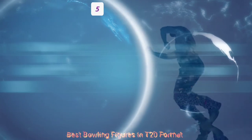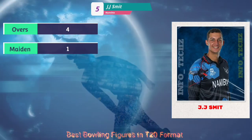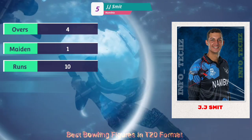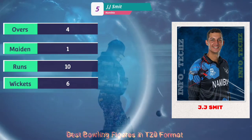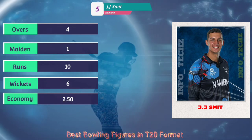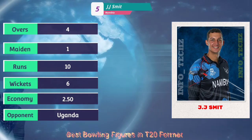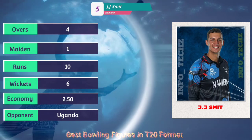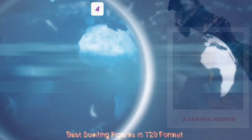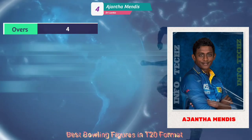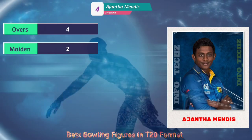At number five, Judges Summit from Namibia — he is the second player in this list from the Namibia side. Four overs, one maiden, 10 runs, six wickets, with an economy of 2.5. His opponent was Uganda. Both teams are associate members. Notably, one gentleman is the only player who appears twice in this list.